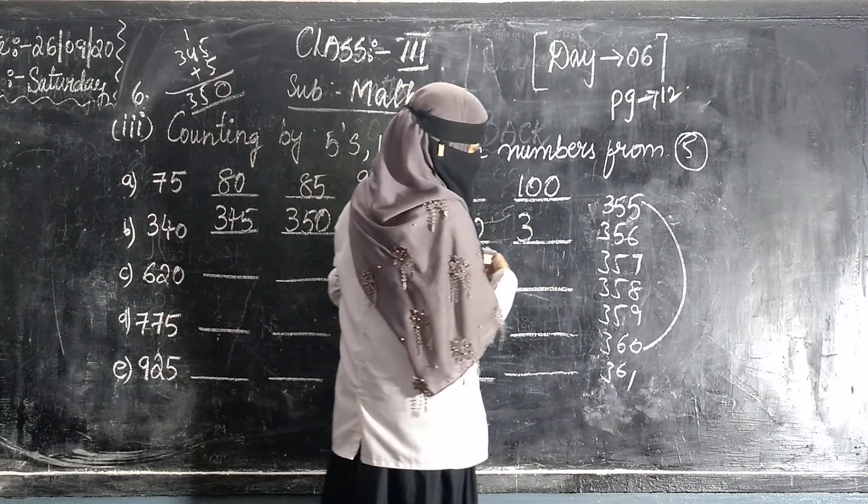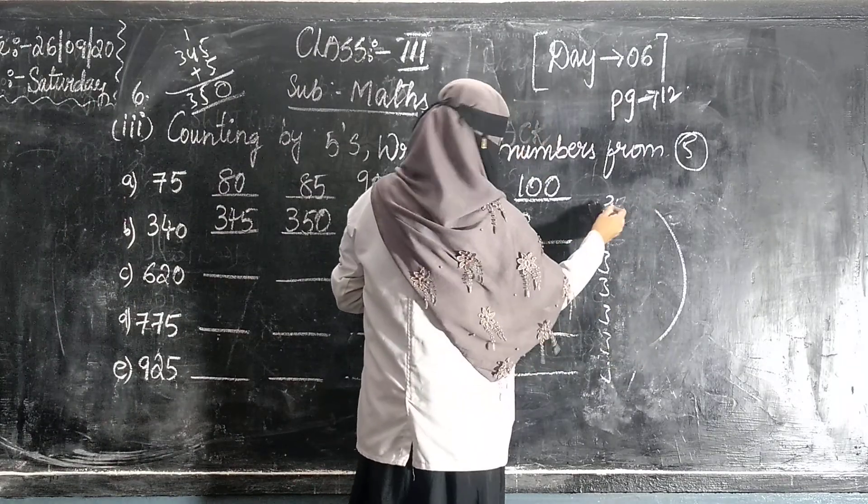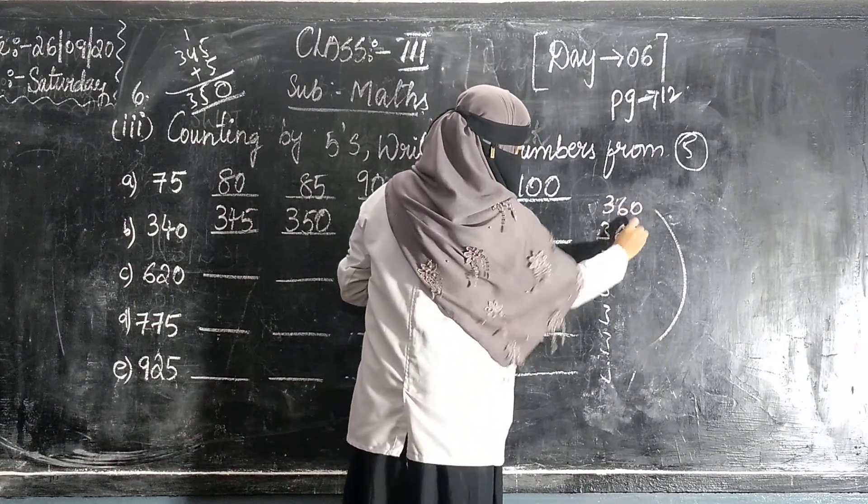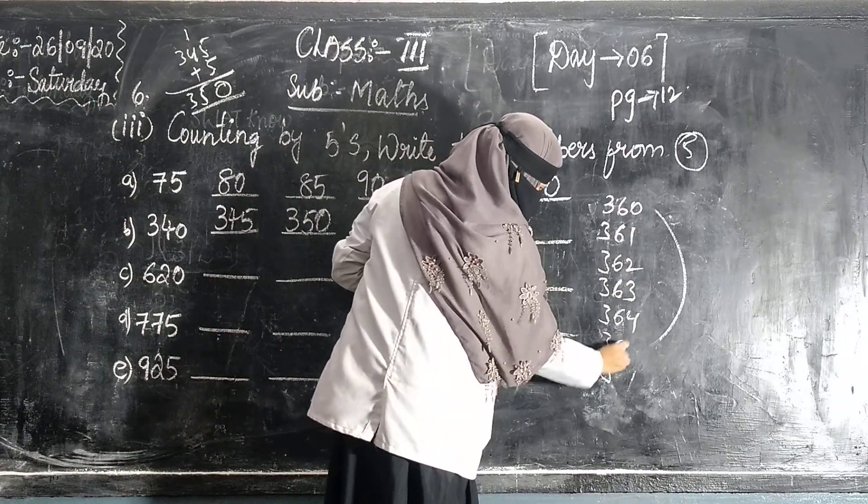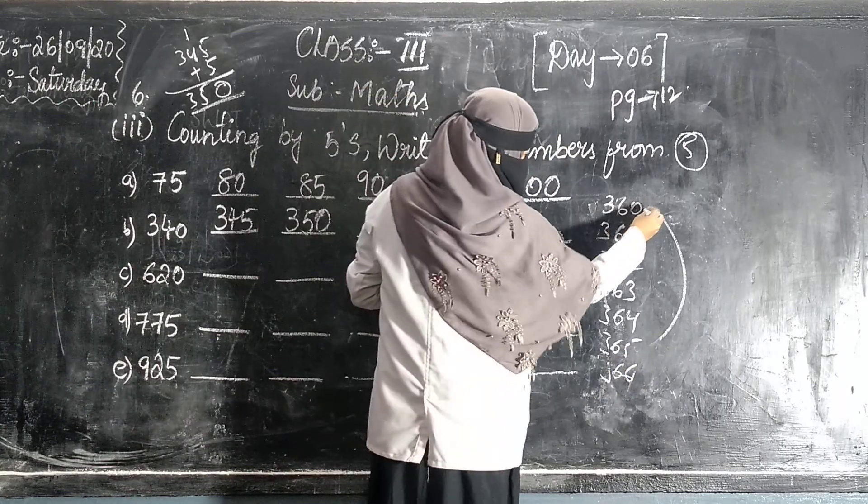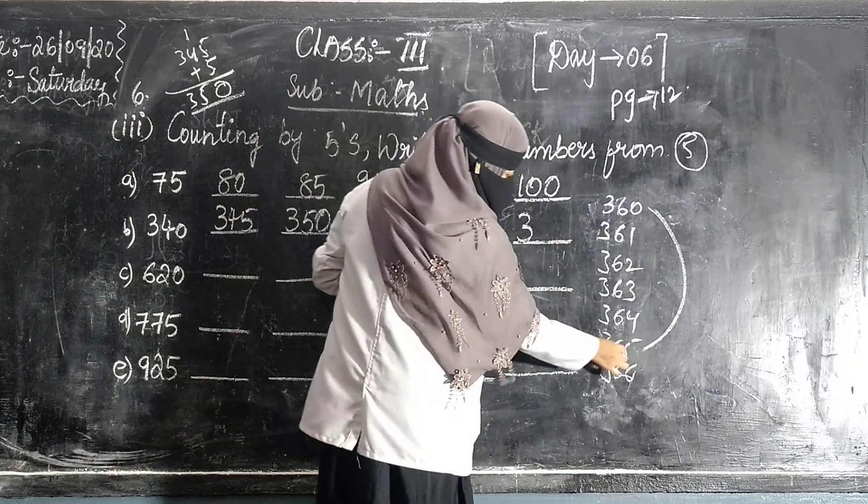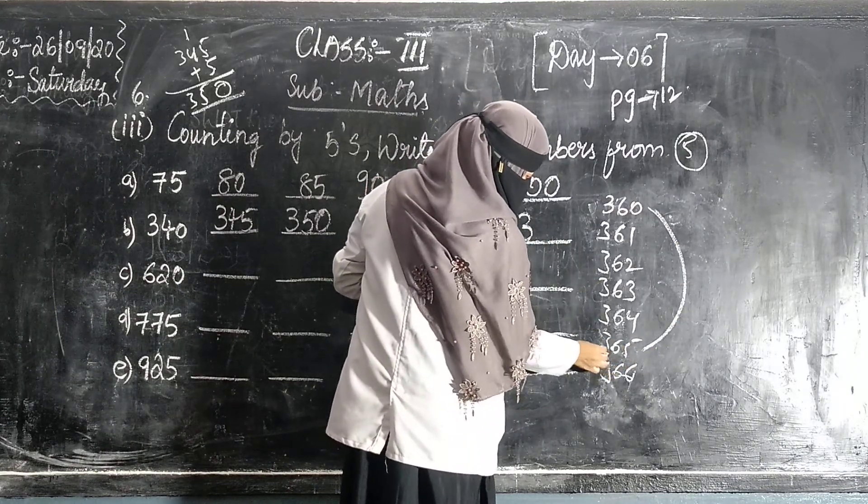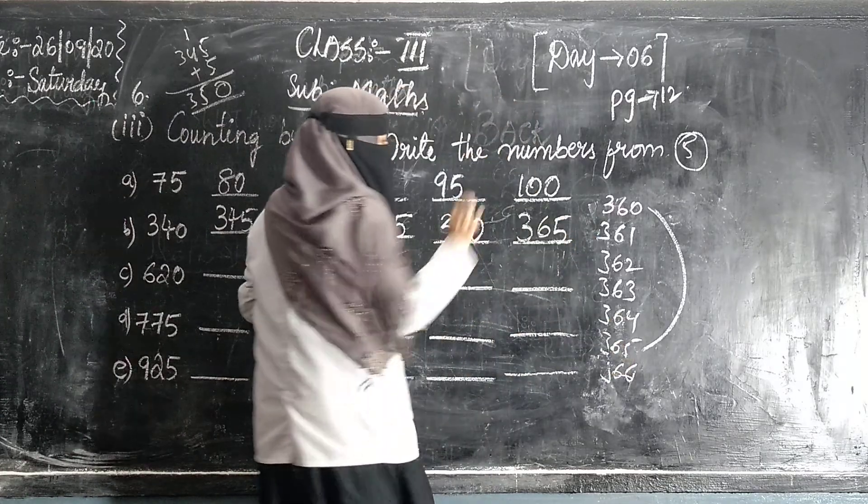Next: 360, 61, 62, 63, 64, 65, 66. 1, 2, 3, 4, 5. What is the answer? 365. Skip 5 numbers.